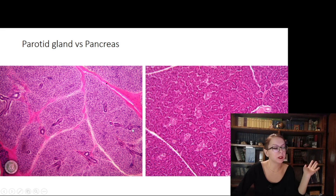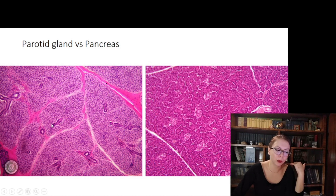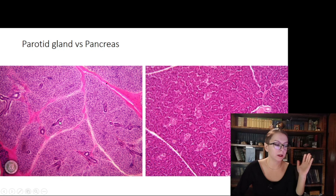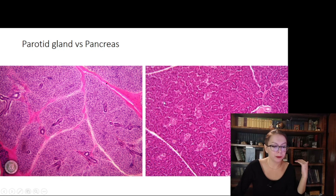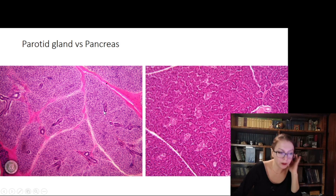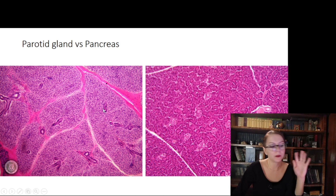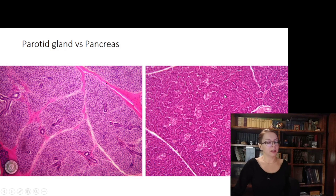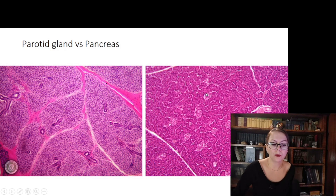Striated ducts are present in the parotid and absent in the pancreas. They are very prominent at different magnifications — both large and small. So if you see striated ducts, this is the parotid; if they are absent, this is likely the pancreas.